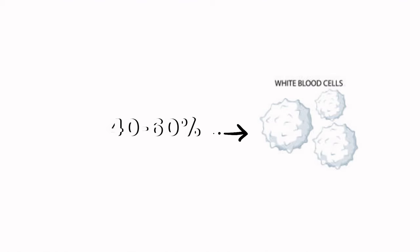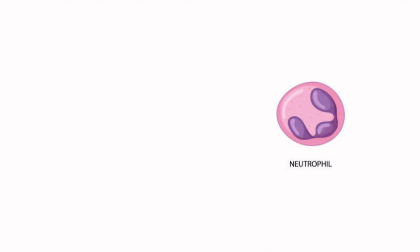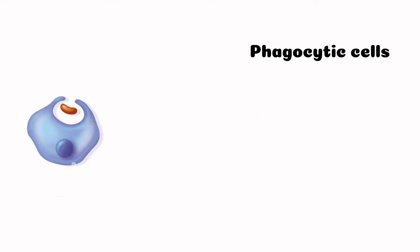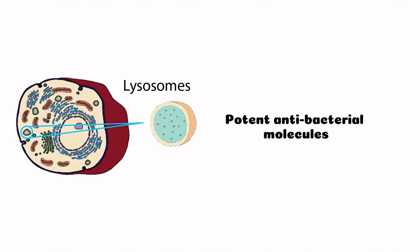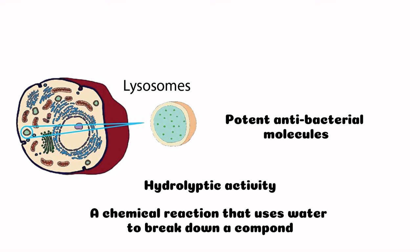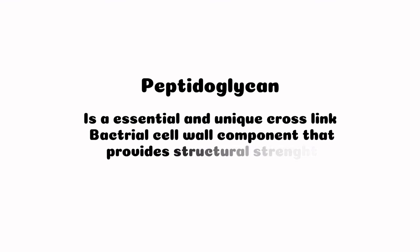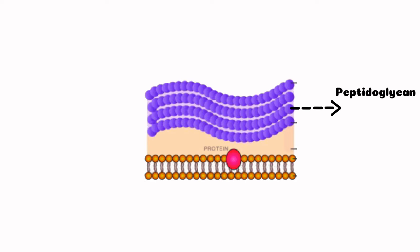Moving on to humoral components, neutrophils are the most common granulocytes, making up about 40–60% of all WBCs in the human body. Neutrophils are phagocytic cells that ingest and digest the pathogen and then eventually go through apoptosis, or programmed cell death. Lysosomes are potent antibacterial molecules involved in the disruption of bacterial cell walls by exhibiting hydrolytic activity — a chemical reaction that uses water to break down a compound. They hydrolyze and cleave the bonds of peptidoglycan, an essential and unique cross-linked bacterial cell wall component that provides structural strength. Thus, disruption of the peptidoglycan in bacterial cell walls has fatal consequences for the bacteria and results in cell lysis.